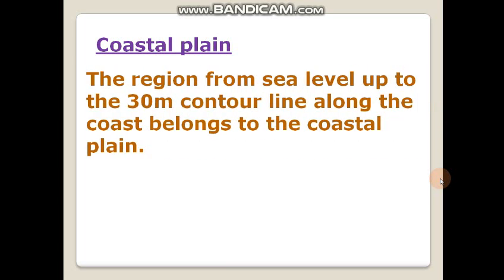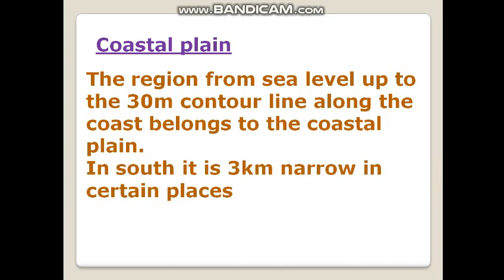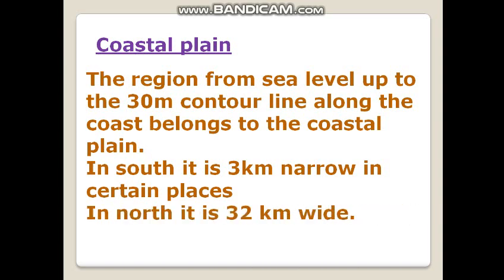Now we will see what is the coastal plain. The region from sea level up to the 30 meters contour line along the coast belongs to the coastal plain. You have to remember this coastal plain is not the same in all areas. In the south it is 3 kilometers narrow in certain places, and in the north it is 32 kilometers wide.